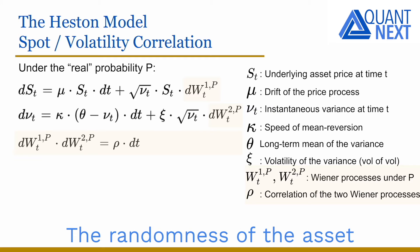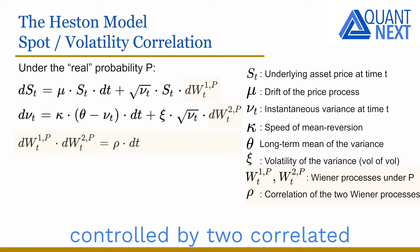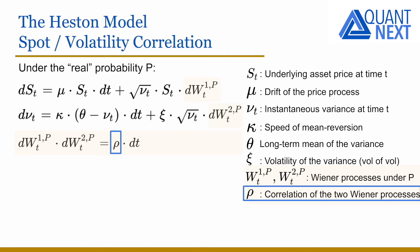The randomness of the asset price and its variance are controlled by two correlated Wiener processes. The correlation rho controls the relationship between the dynamic of the underlying asset price and its volatility. Rho will be typically negative for stocks.